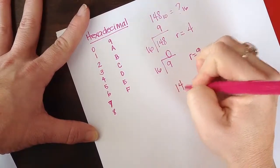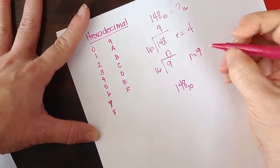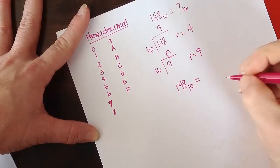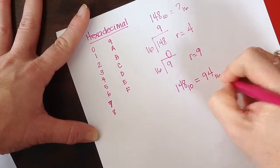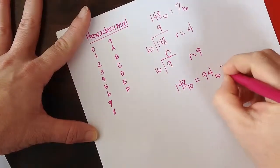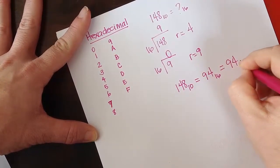So 148 base 10 becomes 9, 4 base 16. Sometimes you also see this written as 9, 4 base hexadecimal.